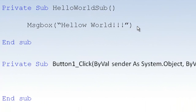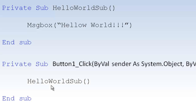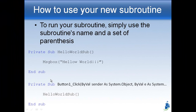To use the subroutine, you call it by writing its name with parentheses. For example, let's write a subroutine called 'HelloWorldSub' with a message box inside that says 'Hello World.' Then, inside a button's click subroutine, you just write 'HelloWorldSub()' — that's calling it. When somebody presses the button, the code jumps to that subroutine and runs it. A subroutine can be called anywhere you want and is defined between 'Private Sub' and 'End Sub.'